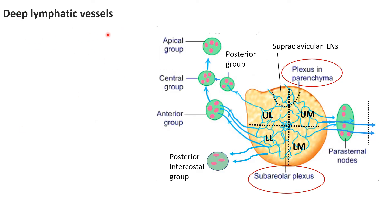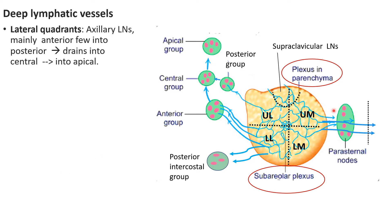Now for the deep lymphatic vessels, which drain the parenchyma plus the areola and nipple, let us divide the mammary gland into four quadrants: upper medial, lower medial, upper lateral, and lower lateral. Lymph from the lateral quadrants — both upper lateral and lower lateral — mainly reaches the anterior or pectoral group of axillary lymph nodes, and some also reaches the posterior group. From the anterior and posterior groups it goes to the central group, and from the central group it goes to the apical group.